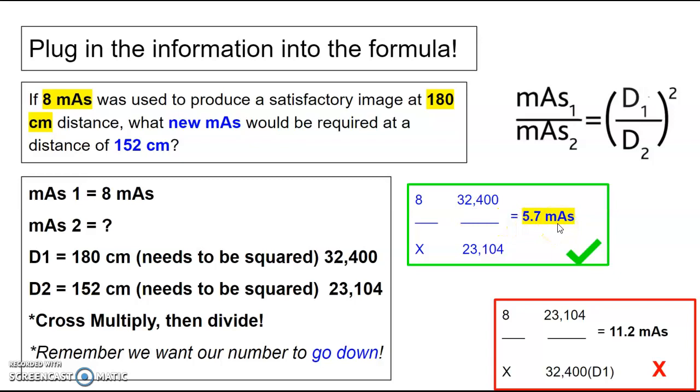Because I was using 8 mAs at 180. I've decreased my distance to 152. My number went down. If you put your numbers in the wrong spots, your number went up. So if your number doesn't make sense, look back to your equation and make sure you're putting your factors in the right spots.